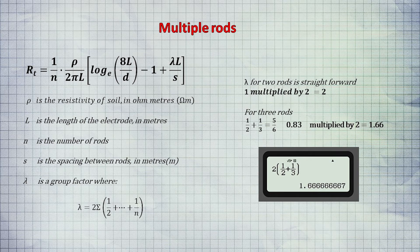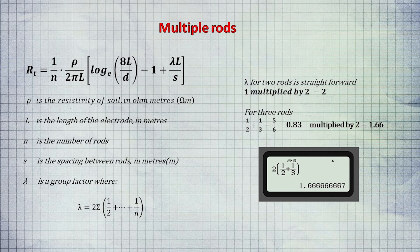This is the formula for multiple rods. You will see the Greek symbol for lambda, which is like an upturned Y, representing what we call a group factor. On the calculator this is represented as shown.